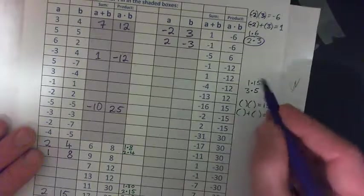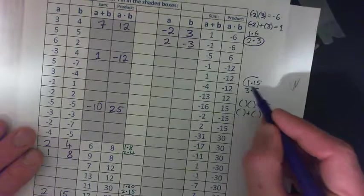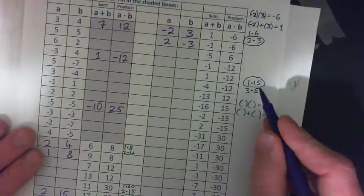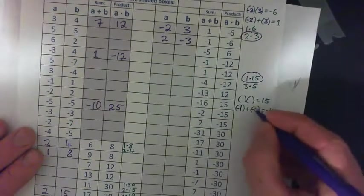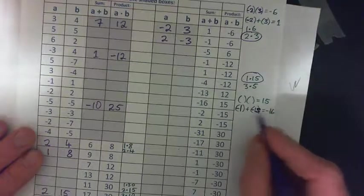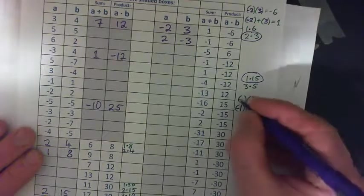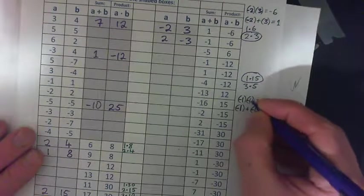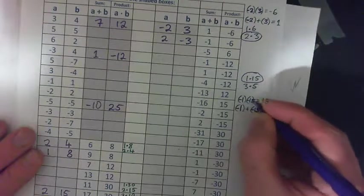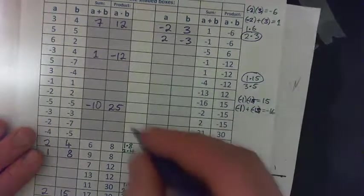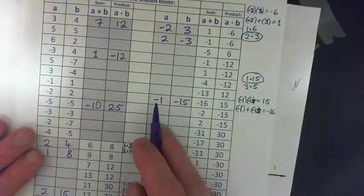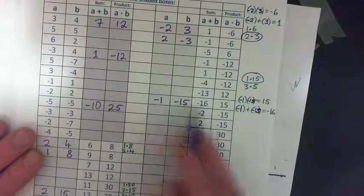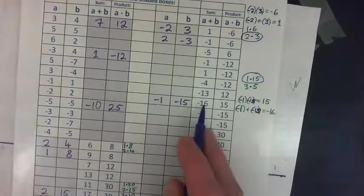1 and 15 make 16, so that might help. If you have a negative 1 and a negative 15, they add to negative 16. And if you multiply them, negative 1 times negative 15 is positive 15. So negative 1 and negative 15 multiply to positive 15 and add to negative 16.